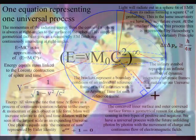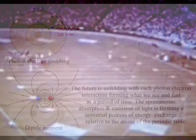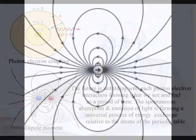In this theory the universe is a continuum with the future continuously unfolding with each photon electron coupling or dipole moment. Each photon electron interaction only occurs once but the process of energy exchange forms the ever-changing world of our everyday life that we measure as a period of time.